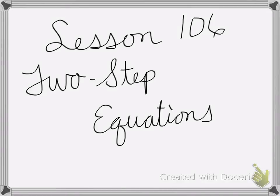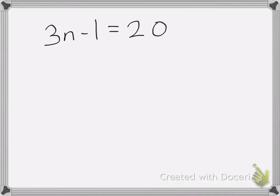Alright, so lesson 106 is on two-step equations. Here I have 3n minus 1 equals 20. If you remember, I want to get this n all by itself. So to do that, I'm going to do the opposite of whatever is around it.